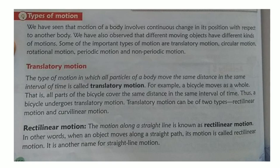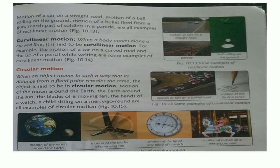That was translatory motion. Now the second of the five types is circular motion. When an object moves in such a way that its distance from a fixed point remains the same, the object is said to be in circular motion. The object starts from one point and completes its motion back at the same point.